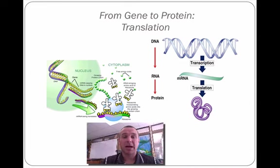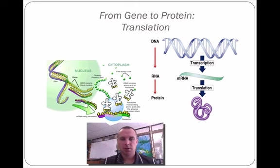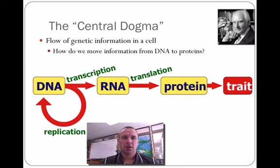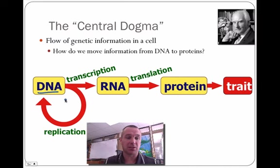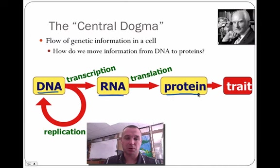Hey guys, it's Mr. Kennedy back with the second part of the Central Dogma, which is translation. Just a refresher: the Central Dogma is how we take DNA, which is found inside the cell in the nucleus, turn it into RNA, and then translate that message into a protein, which ultimately becomes a trait.